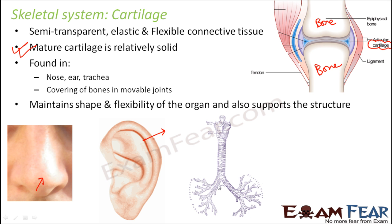Cartilage is also found in the trachea. The trachea is the windpipe — when we breathe in, air passes through the windpipe inside our body. We cannot see that windpipe so we cannot really feel the presence of cartilage there, but these are some of the areas in our body where cartilage is present.